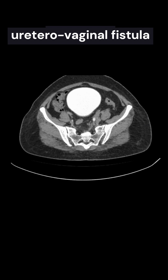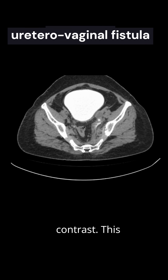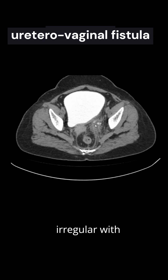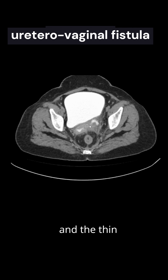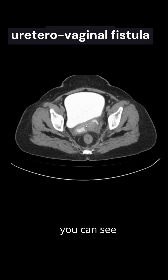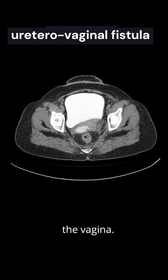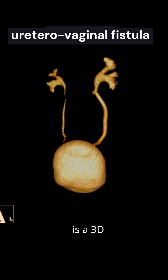On the axial sections, again around the left ureter there is periureteric leak of contrast. The ureter looks irregular with some leak of contrast in the pelvis in the perivesical region. A thin tract can be seen — not very well visualized — but here you can see the tract joining the ureter and the vagina. This is an iatrogenic uretero-vaginal fistula.